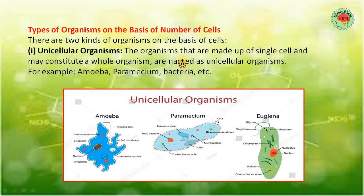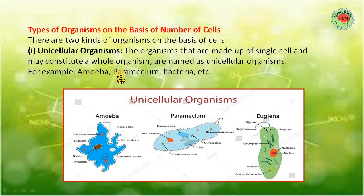Now let's see the types of organisms based on number of cells. There are two types: unicellular organisms and multicellular organisms. Unicellular organisms are made up of a single cell that constitutes the whole organism - the entire organism has only one cell. Examples of unicellular organisms are amoeba, paramecium, bacteria, and euglena.